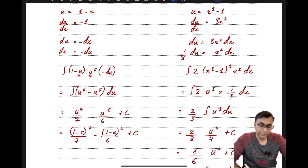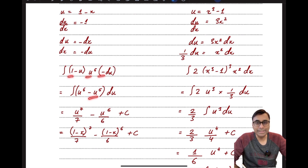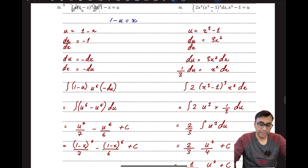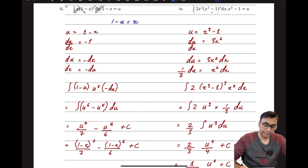Multiplying the terms together: u⁵ × u × (−1) = −u⁶ and u⁵ × (−1) × 1 = −u⁵, giving two easily integrable terms. Applying the power formula: u⁶ integrates to u⁷/7 and u⁵ integrates to u⁶/6. Once integration is done, I replace u with (1 − x) to get the final answer.